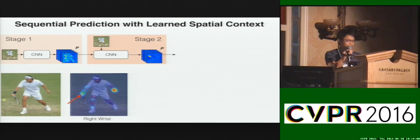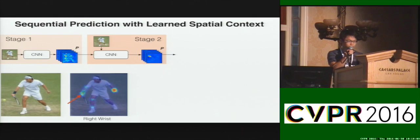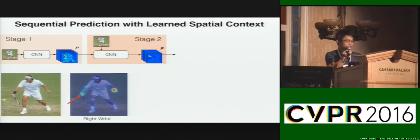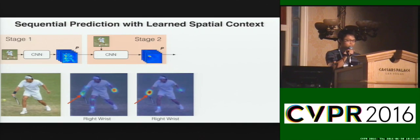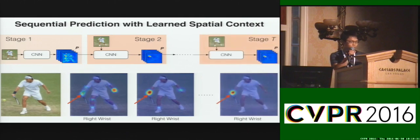The next stage also takes the image as input, but this time it also incorporates the previous stage's output. With the belief maps as input, we refine the point locations. Now the belief map has fewer peaks, and we repeat this process.